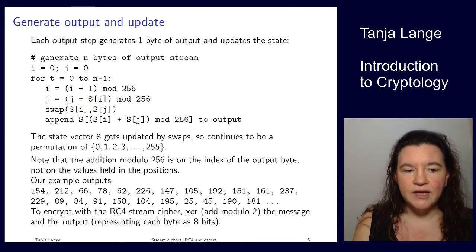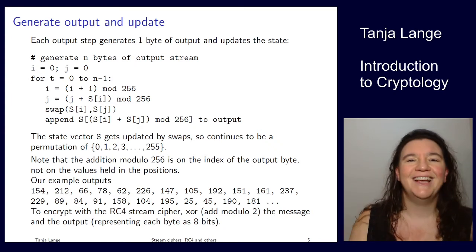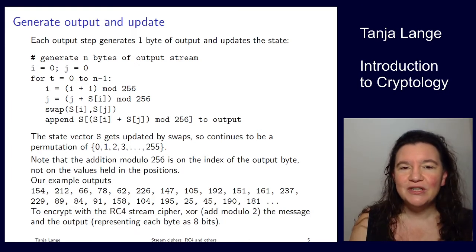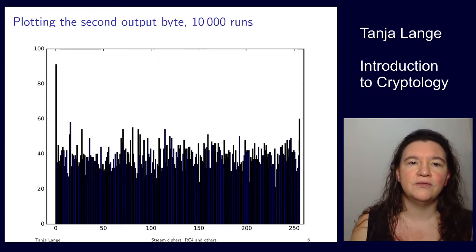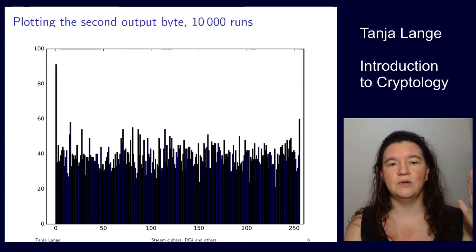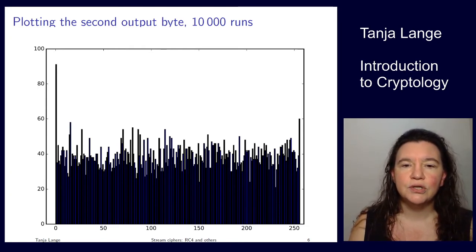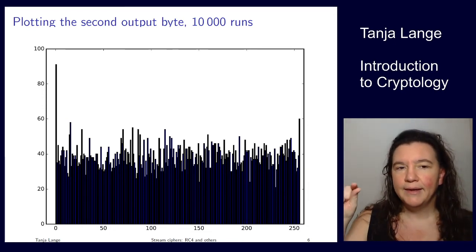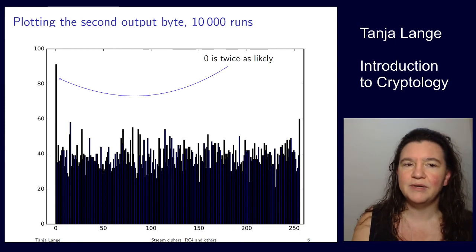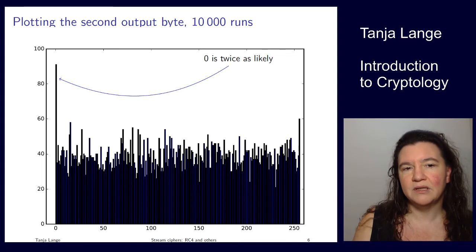The exercise sheet takes you on a journey to explore what the cipher is actually doing — which is what you should do with any cipher you encounter, whether it has a famous name or not. You should always look for something strange. Plotting the second output byte frequency over 10,000 runs, you can see the distribution from output 0 to 255. The value zero is about twice as likely as all the others — it really sticks out.